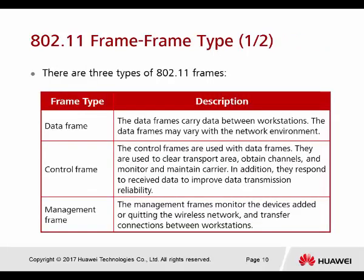There are three different frame types. First, the data frame — basically used by our STAs, clients, or servers. That kind of information all belongs to the data frame. Next is the control frame, which is used together with the data frame. Before we can send a data frame, both the STA and the AP must use control frames.